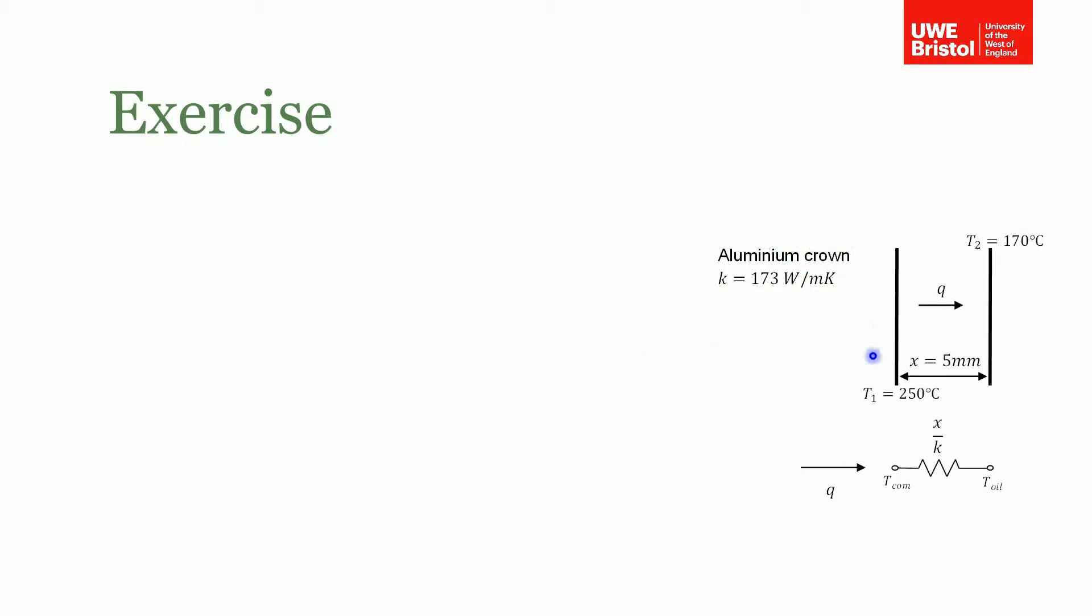So first of all, always draw a sketch. Here this is the top of the piston crown at 250 degrees C. You've got the thickness of 5mm and the inside is 270. You can see the heat flux is going from left to right. And I mentioned you can make an electrical analogy. So you can see here's a resistor which has that thermal resistance, if you like, of X over K—the distance divided by the thermal conductivity.